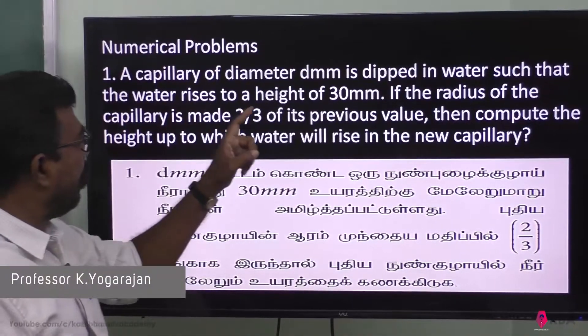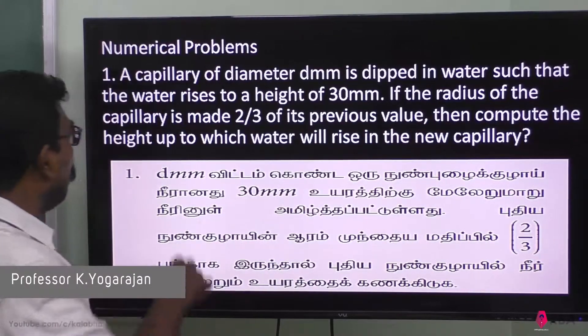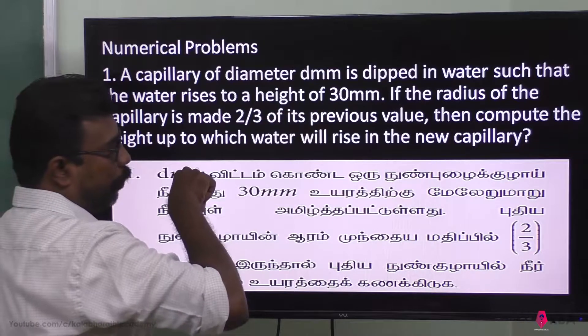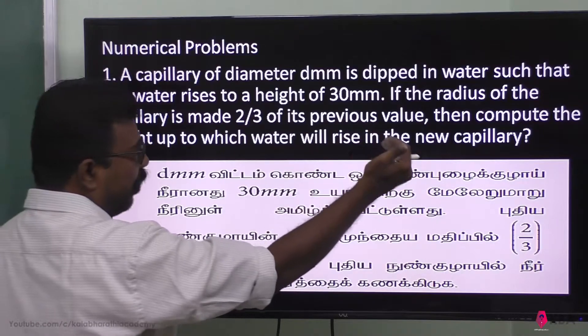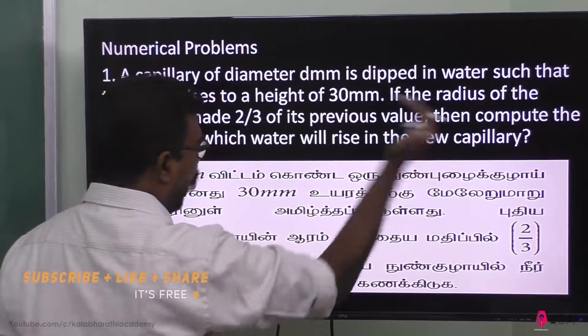A capillary of diameter d mm is dipped in water, such that the water rises to a height of 30 mm. If the radius of the capillary is made two-thirds of its previous value, then compute the height up to which water will rise in the new capillary.